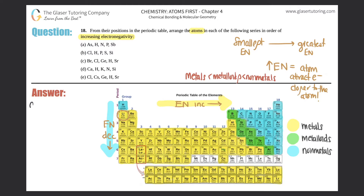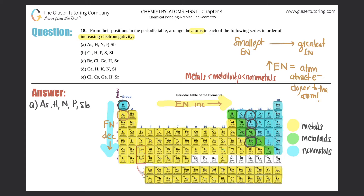For A, we have arsenic (As), hydrogen, nitrogen, phosphorus, and antimony (Sb). Let's circle them on the periodic table. It looks like all four — arsenic, nitrogen, phosphorus, and antimony — are in a line with each other, and the only outlier is hydrogen. You might think hydrogen would be the lowest, and then you'd work from bottom to top, but that's not the case here. Don't get fooled.